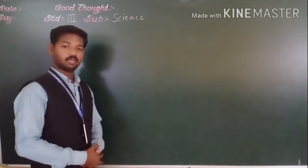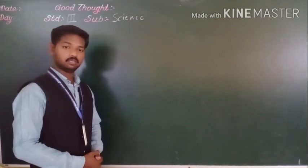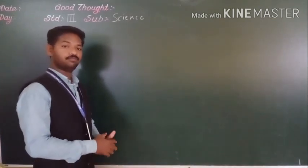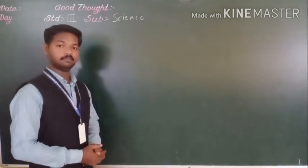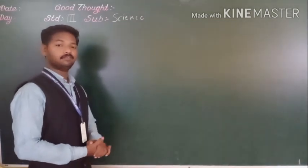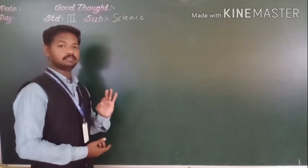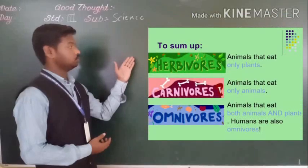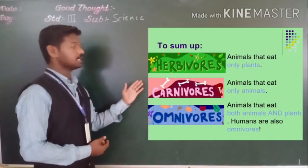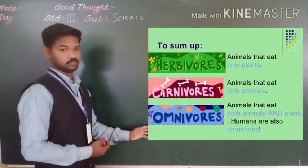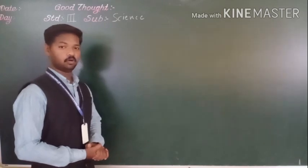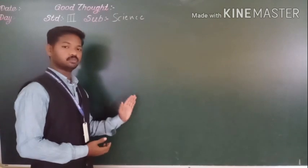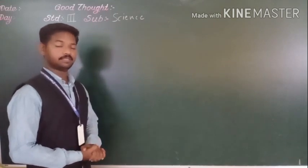So what we have learned today? We have learned different animals eat different kinds of food. According to their eating habits, animals are classified into three groups. These are herbivores, carnivores and omnivores. Hope you all have understood what we have learned today. So these all you have to read from textbook.